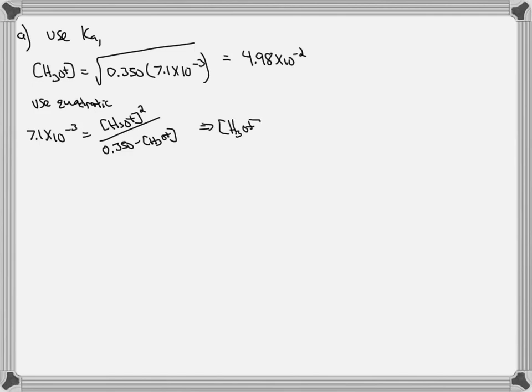Solving this quadratic gives us the hydronium concentration of 4.64 times 10 to the negative 2 molar. pH then is simply the negative log of this value, or 1.33.